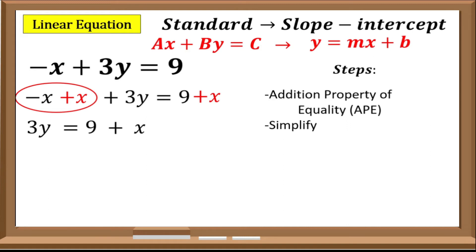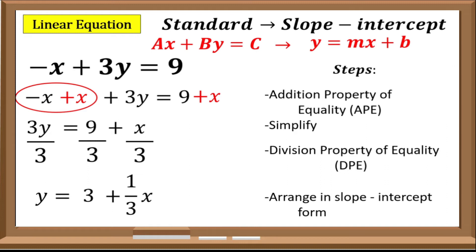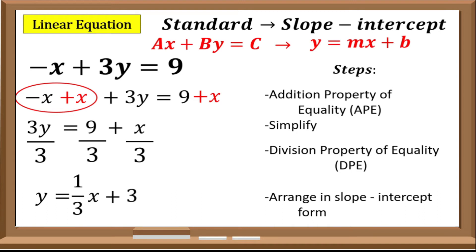Since the numerical coefficient of y in slope-intercept form is 1, we will be eliminating 3. To do that, we will be using the division property of equality. So that is 3y divided by 3, and 9 divided by 3. That gives y equals 3 plus 1 over 3x. Arranging into slope-intercept form where the term with variable x is the leading term on the right side, the slope-intercept form of negative x plus 3y equals 9 is y equals 1 over 3x plus 3.